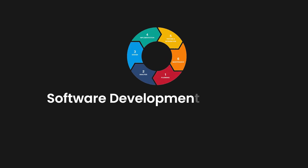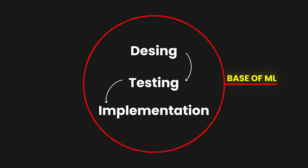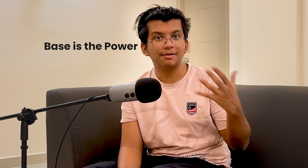The next step is learning about the software development life cycle (SDLC), which comes in several steps. You need to understand the theory: requirement gathering, analysis, design, testing, implementation, and everything that comes with it. It really acts as one of the most important things in your MLOps journey, because this sets up the base of machine learning. As I always say, the base is the power. I've linked great resources in the description and the GitHub repository.